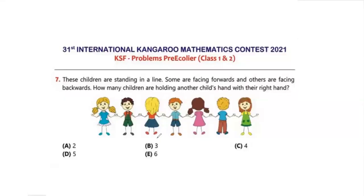Question 7: These children are standing in a line. Some are facing forwards and others are facing backwards. How many children are holding another child's hand with their right hand? The right hand is generally the hand with which we write — most kids write with their right hand, so you can remember it that way.